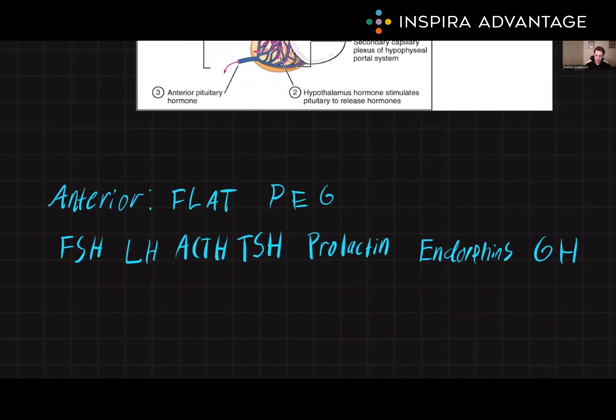Both FSH and LH regulate the reproductive system by controlling growth and maturation of the ovaries and testes, and the production of estrogen and testosterone.